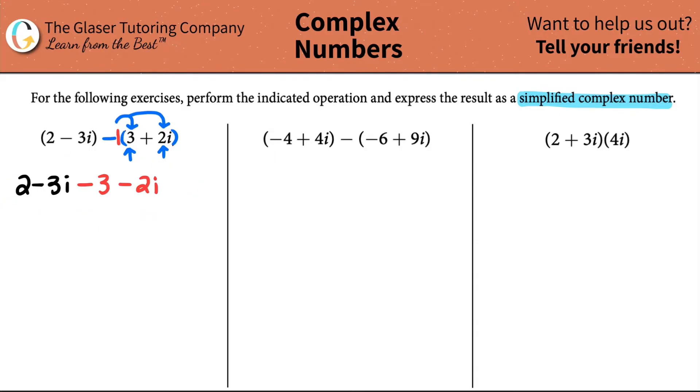Now we have this and all we have to do is simplify. We just have to group like terms together. I have two numbers here without the i's. I have a two and I have a minus three. So if I put those together, two minus three is a negative one.